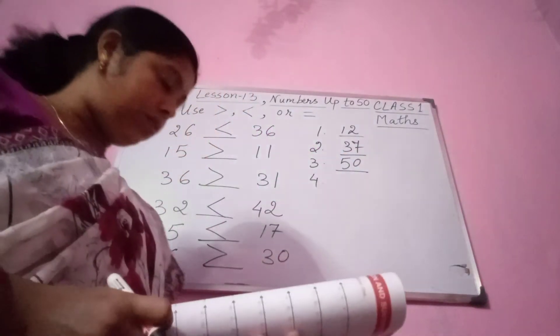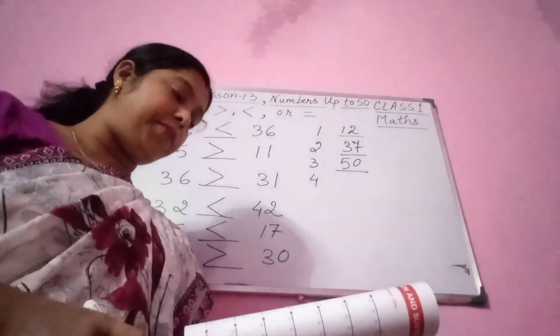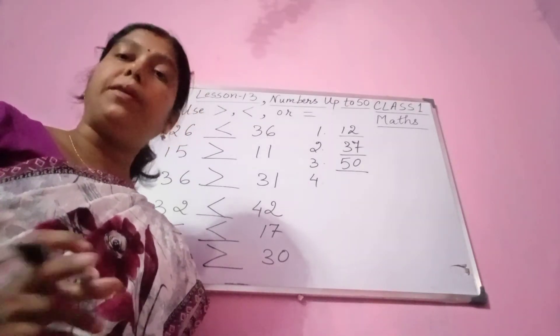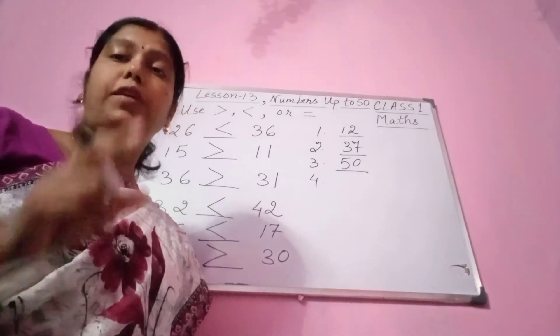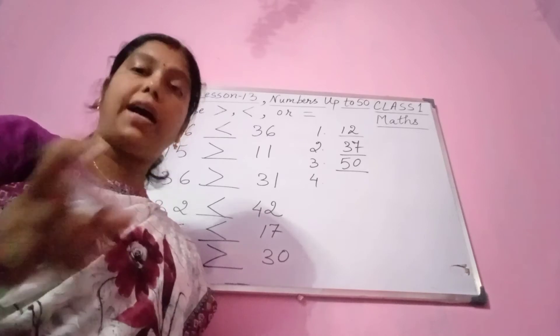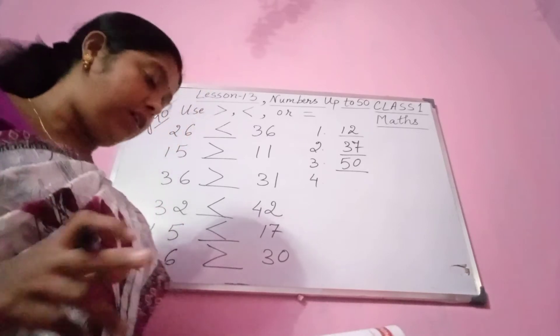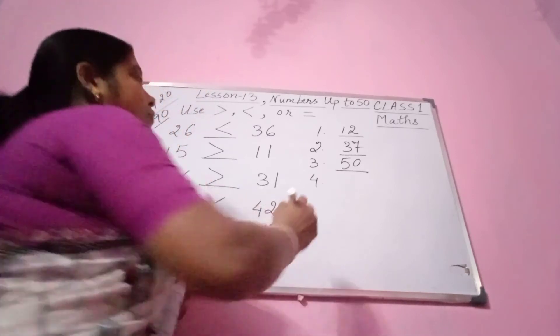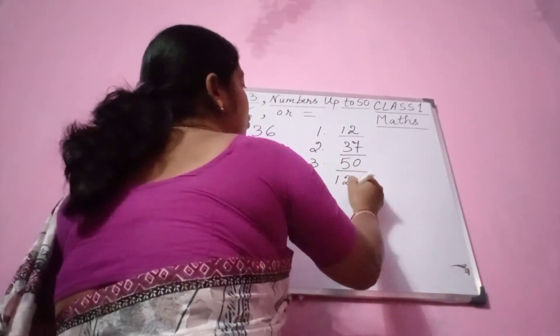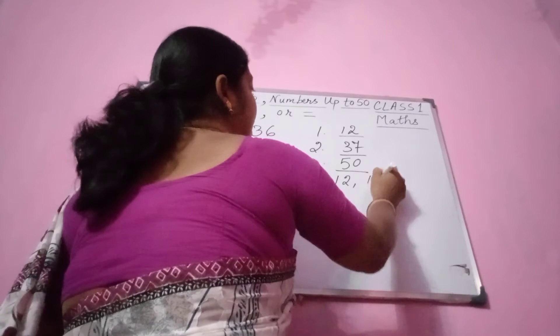Which numbers are between 10 and 20? Please see in the wheel — 12 and 19. Two blanks are given: 12 and 19.